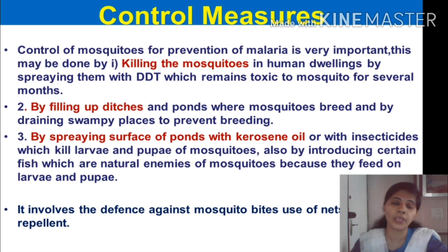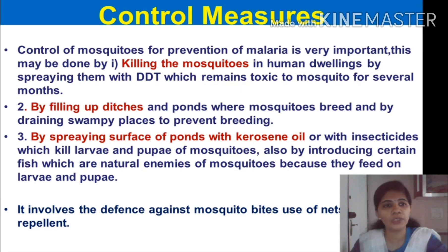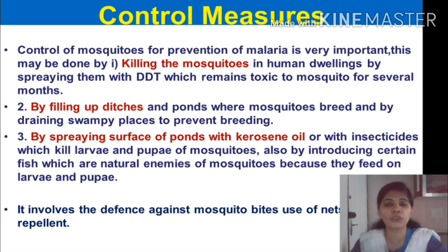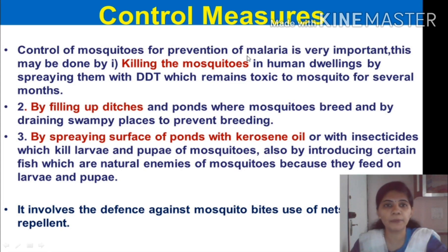Many people die from malaria every year all over the world. To control malaria, we must note that the malarial parasite Plasmodium vivax requires two hosts — a human being and particularly the female Anopheles mosquito. The control measures focus on controlling the mosquito population, because if we control the mosquitoes, the life cycle of Plasmodium vivax will be broken, as the sexual phase is completed only in the body of the female Anopheles mosquito.